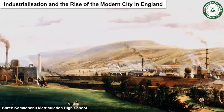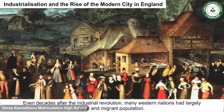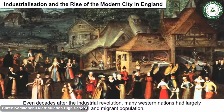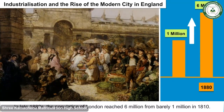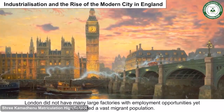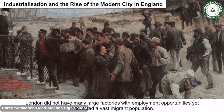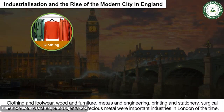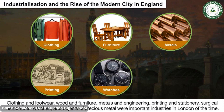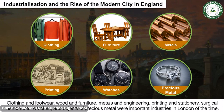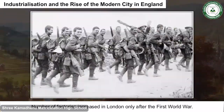Industrialization and the rise of the modern city in England: Even decades after the Industrial Revolution, many Western nations had largely rural and migrant populations. In the late 1880s, the population of London reached 6 million from barely 1 million in 1810. London did not have many large factories, yet it attracted a vast migrant population. Important industries included clothing and footwear, wood and furniture, metals and engineering, printing and stationery, surgical instruments, watches and objects of precious metal. The number of factories increased in London only after the First World War.